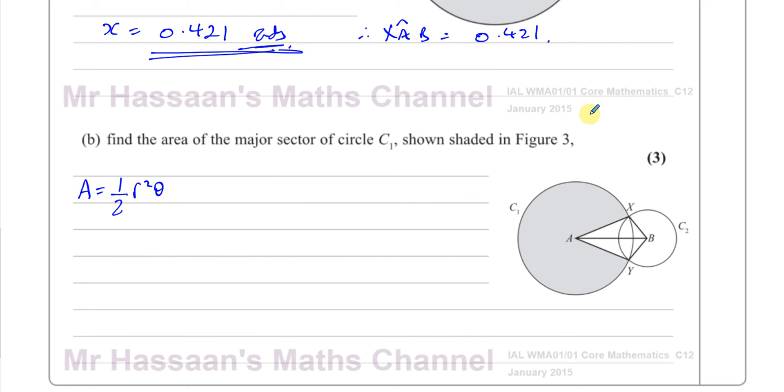Most of us in IGCSE were used to area equals θ/360 times πR². The area of a sector was given like that when the angle is measured in degrees. We know that 360 degrees is 2π radians. So when you measure it in radians, the 360 becomes 2π, and then the π's cancel, and you're left with θ/2 times R², which is ½R²θ. This can only be used when the angle is measured in radians.